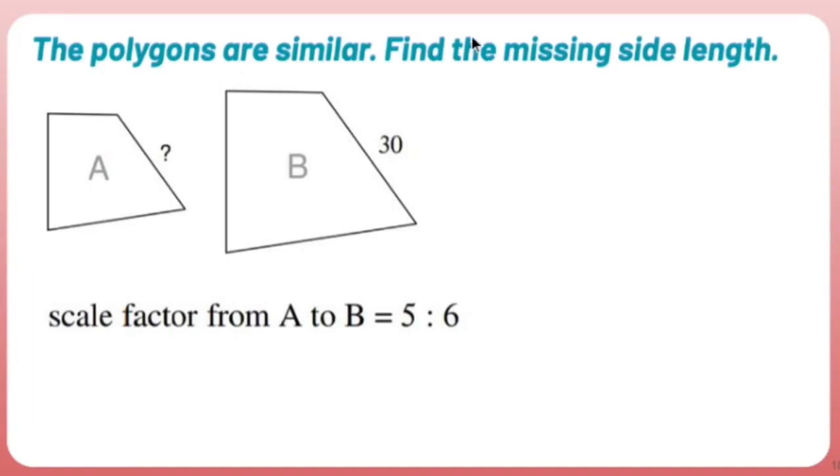The polygons are similar. Find the missing side length. The scale factor from A to B is 5 to 6, and I have I don't know, but it matches up with 30.